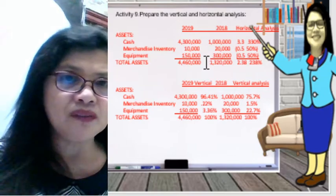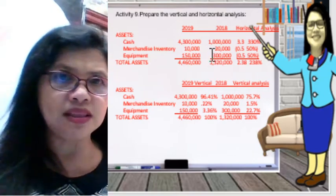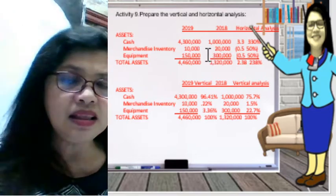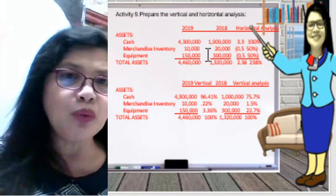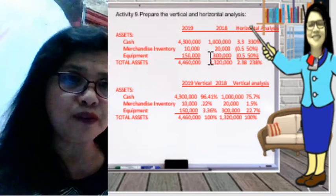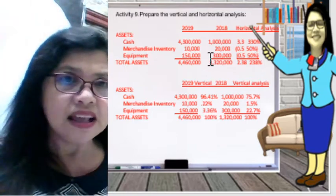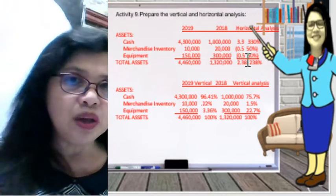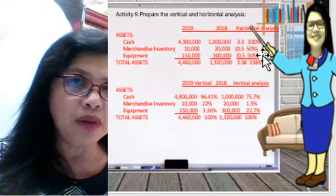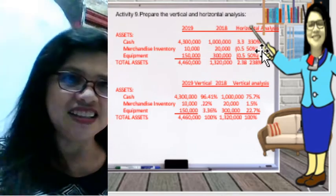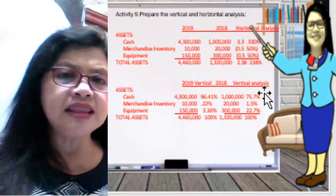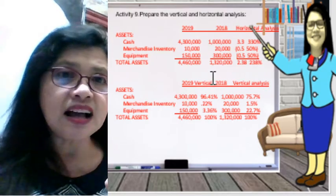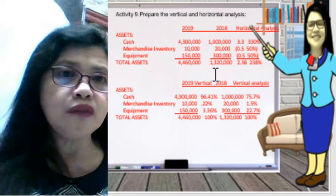For equipment, we have 300,000 in 2018, and it decreased again in 2019 to 150,000. So 150,000 minus 300,000 divided by 300,000 gives negative 50% — a decrease in the equipment account.